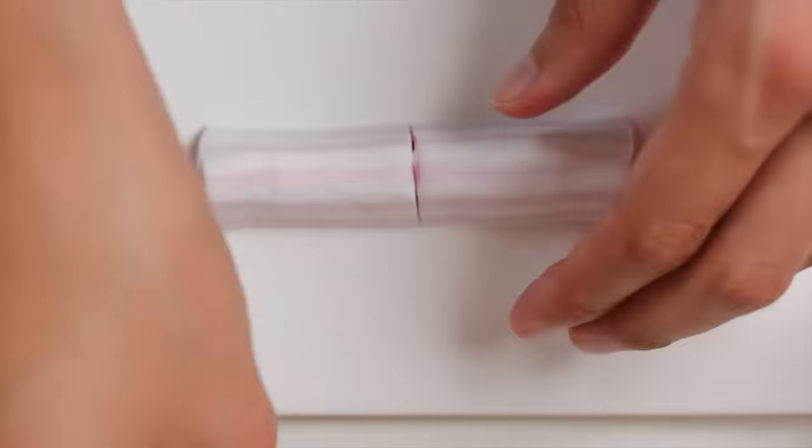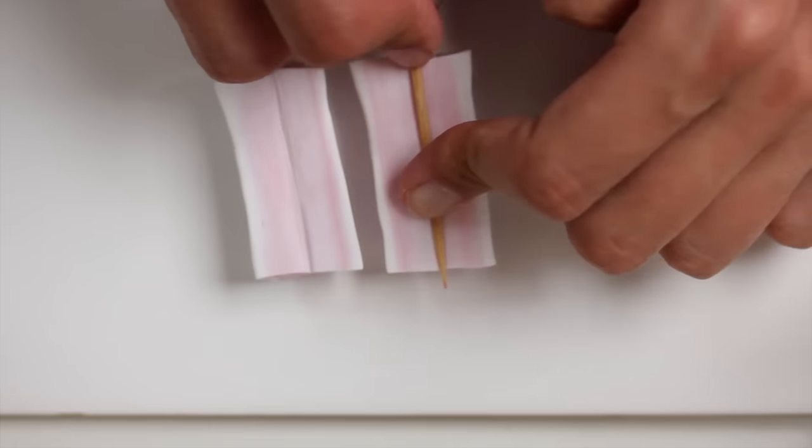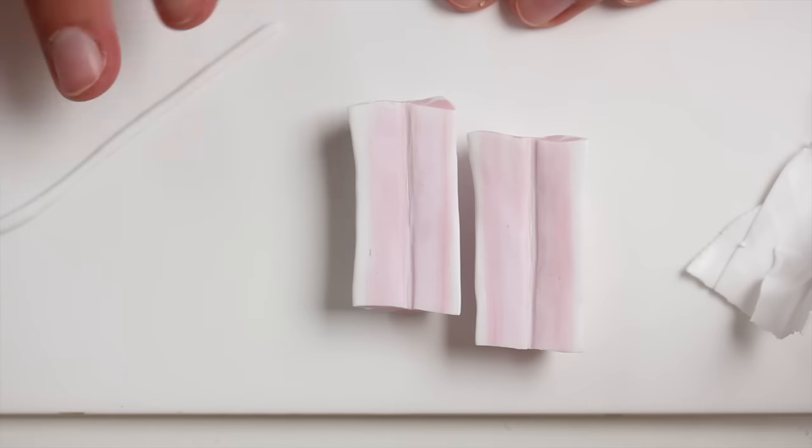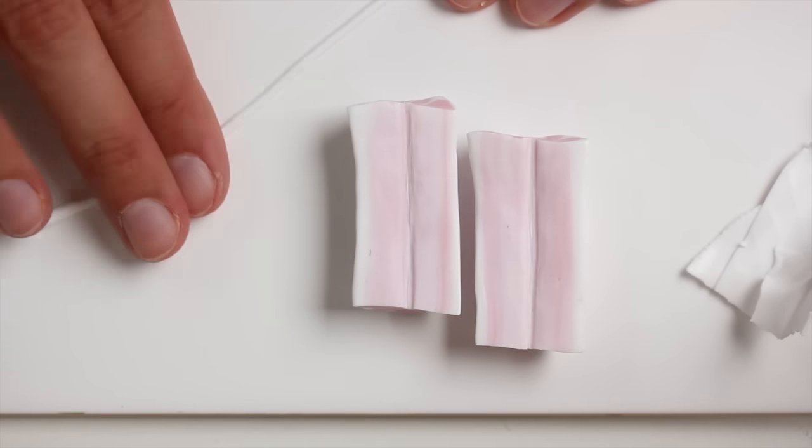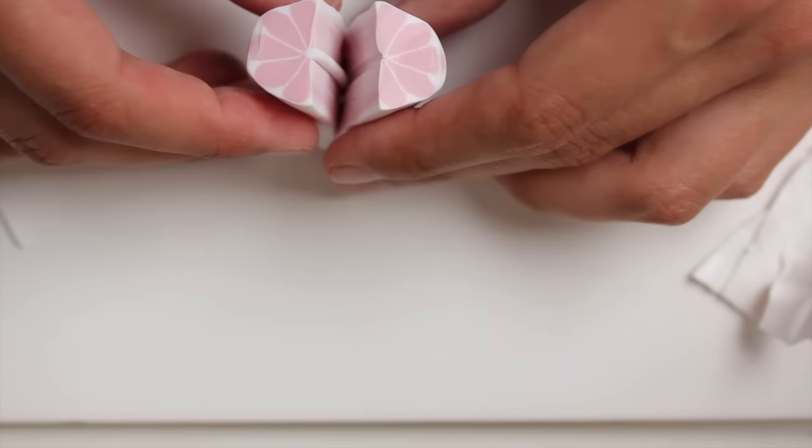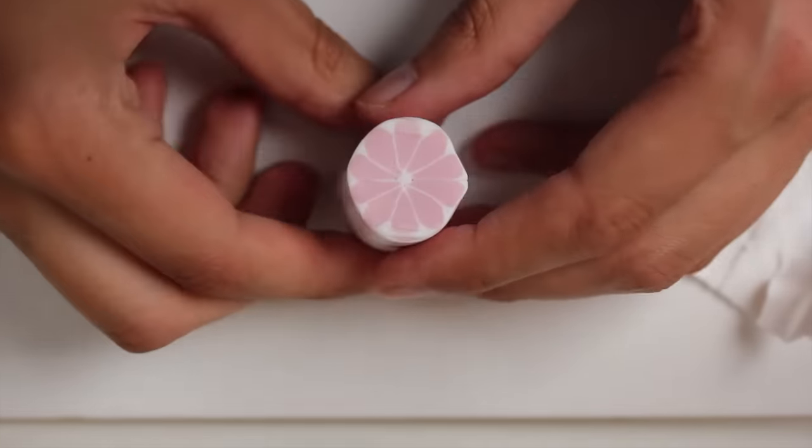I used a ruler this time—I don't always do, but I didn't want to mess up in front of the camera really, that's the reason. And I used a toothpick to make an indent in the middle to add some of the white clay, because usually citrus fruit always have some more white in the middle, so that's just it.